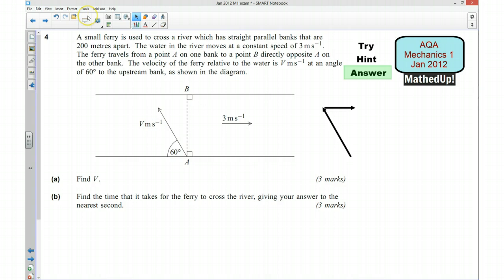we're trying to find V, which is this here. Well, I know this is 3 metres per second, and I know that this is V metres per second. And I also know that my resultant velocity is going to be here and that angle there. Well, if that's 60 degrees, this here has got to be 30 degrees.